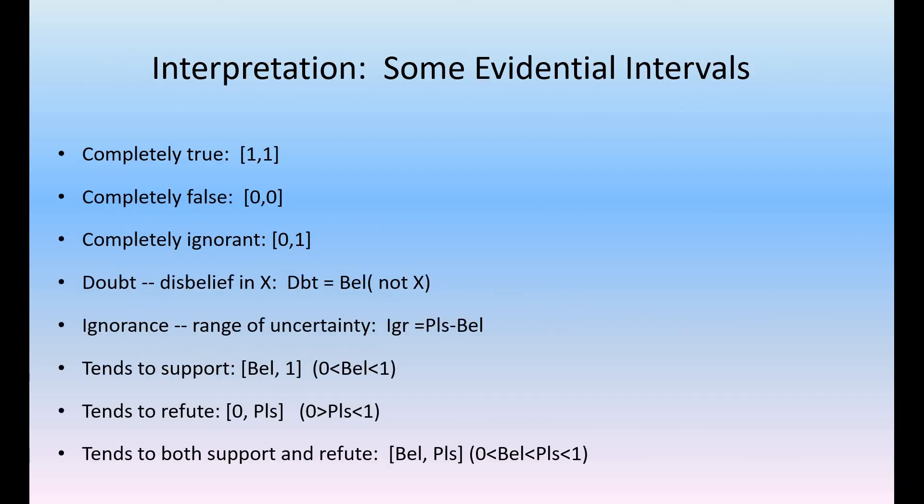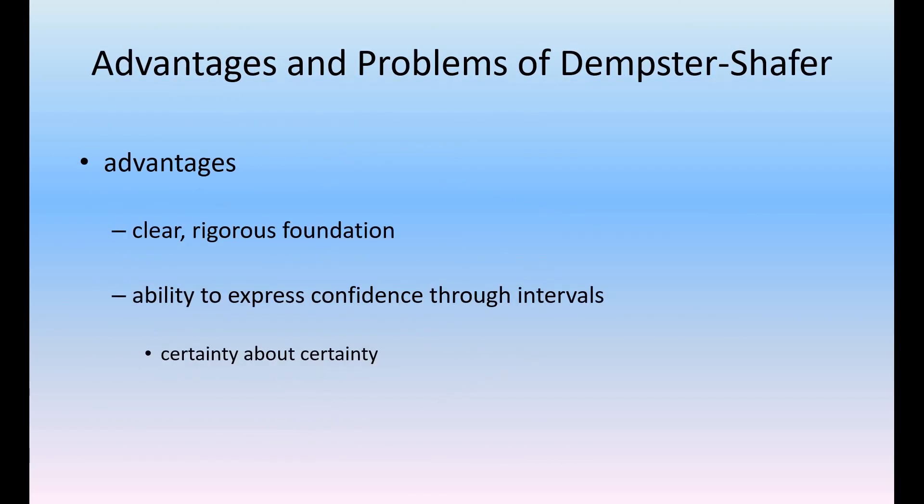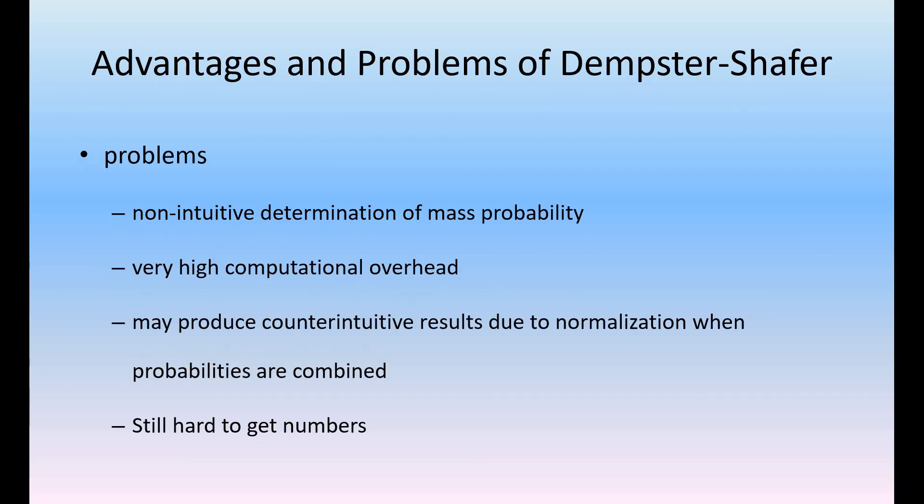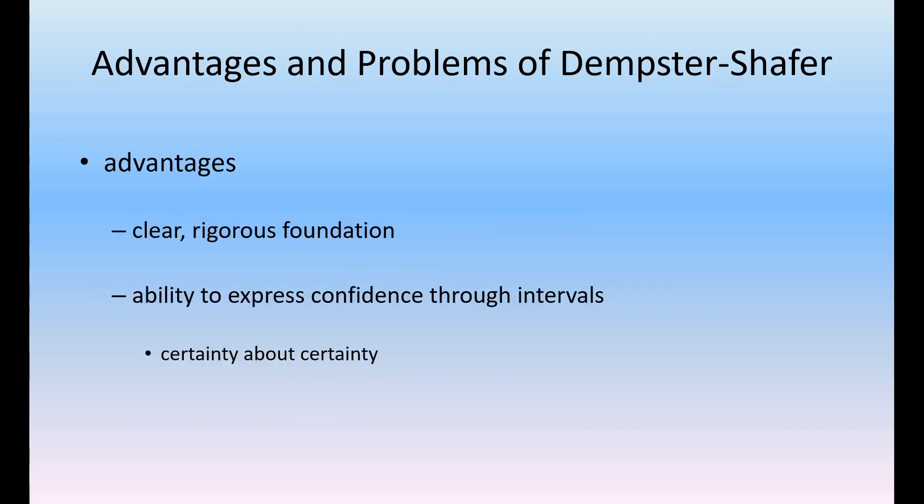These are the things relevant to Dempster-Shafer theory. Still, Dempster-Shafer theory certainly handled the uncertainty, but it is not up to the mark. It was not completely handling this uncertainty, even though it is good. It is somewhat complex and has somewhat overhead. That is why we can have some other kinds of things, those are certainty factor rules. In the coming video, we will discuss the certainty factor rules. This is about the Dempster-Shafer theory of uncertainty handling mechanism in artificial intelligence.